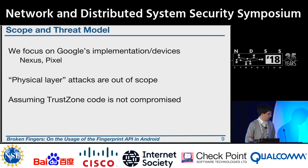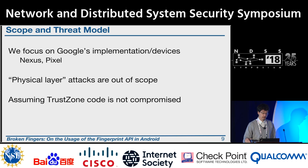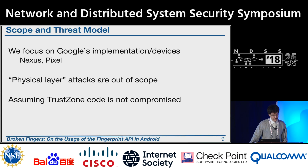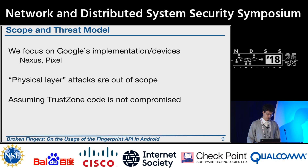We focus on Google's implementation of this API, which developers can use on Google's devices such as Nexus and Pixel devices. We do not consider physical layer attacks like the possibility of forging fake fingerprints, and we assume that the code running in TrustZone is not compromised, whereas the operating system code might be compromised.